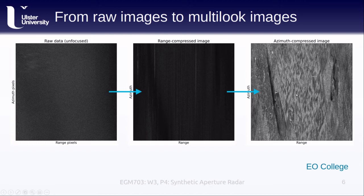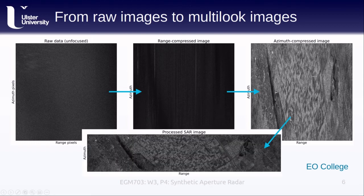As a final step, we can average over every five pixels or so in the azimuth direction, depending on the relative resolutions of the azimuth and the range, in order to get an image with pixels that are approximately square.